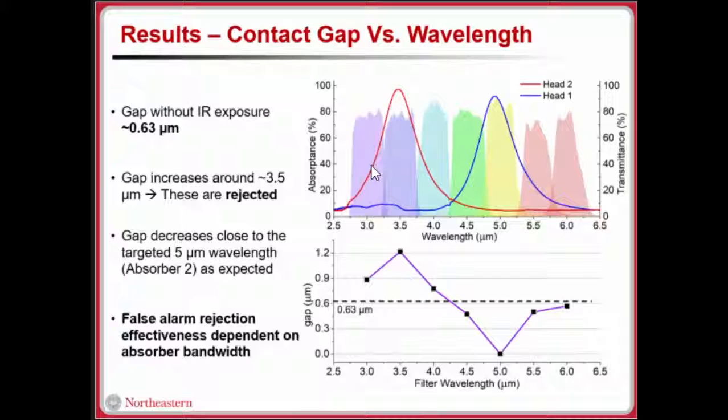It's the same case with these filters, the 4.5 and 5.5. As you can see, the contact gap decreases and that means that with high enough power, the device can be triggered by 4.5 and 5.5 micron. But if we want to make that better, we need to use narrower band absorbers. In the future, we have plans for incorporating much narrower band like 200 nanometer wide absorbers.